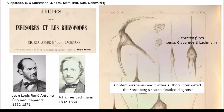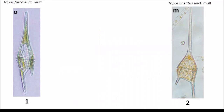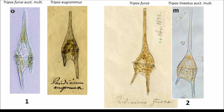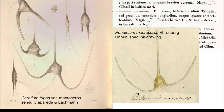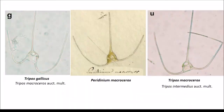For that reason, we follow the interpretation of other authors. For example, for the species that we call Tripos furca, Ehrenberg called it Tripos ugramus, and for the species that we call Neatus, it's the real Tripos furca. And the same, for example, for Tripos macroceros, that doesn't correspond to the species that we call Macroceros.